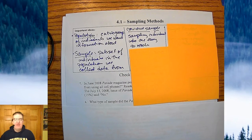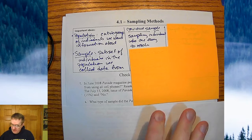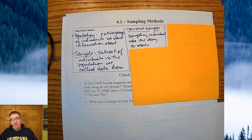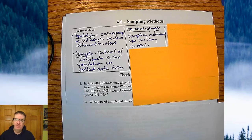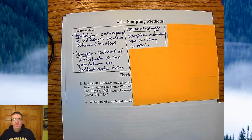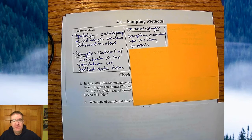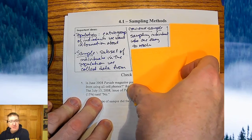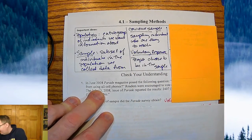Convenience sample is exactly what it sounds like — sampling individuals who are easy to reach. Back in the late 20th century, there was something called the mall. Near entrances, there would be people who would say, 'Hey, would you like to take a survey?' Survey companies were located in malls because people would go there and they could just grab them. Those are all convenience samples — they wouldn't have to call them because they're already right there. Basically, think about a convenience store — you can get whatever you want. Sampling individuals who are easy to reach, not necessarily the best, but sometimes it will do.